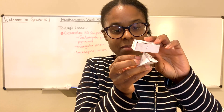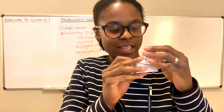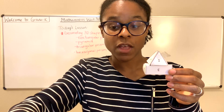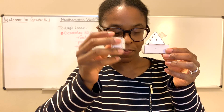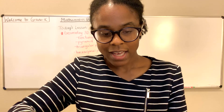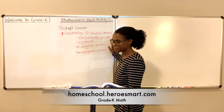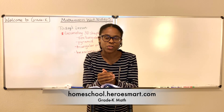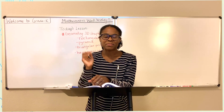So you have rectangular prism, pyramid, triangular prism, and hexagonal prism — all four that we've talked about in this unit are here. That concludes our lesson for today. That should help you complete your assignment in your workbook. Thank you so much for coming by — until next time, God bless.